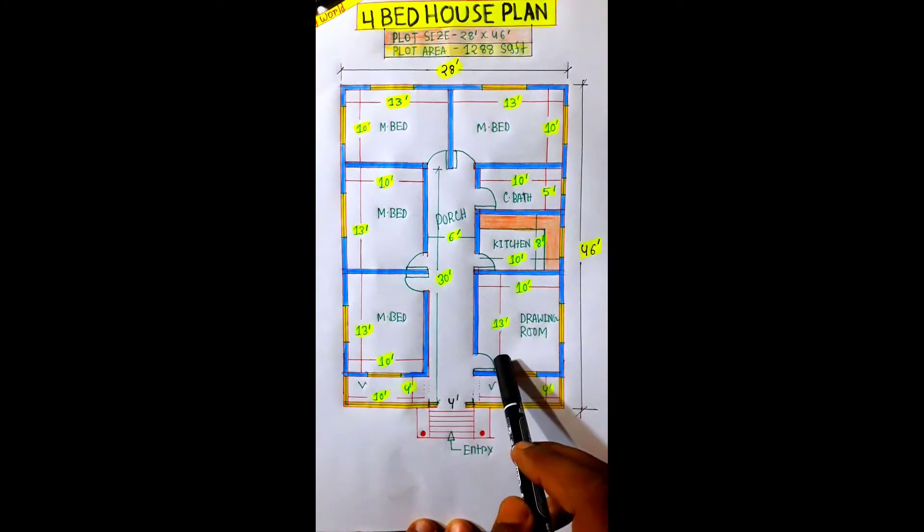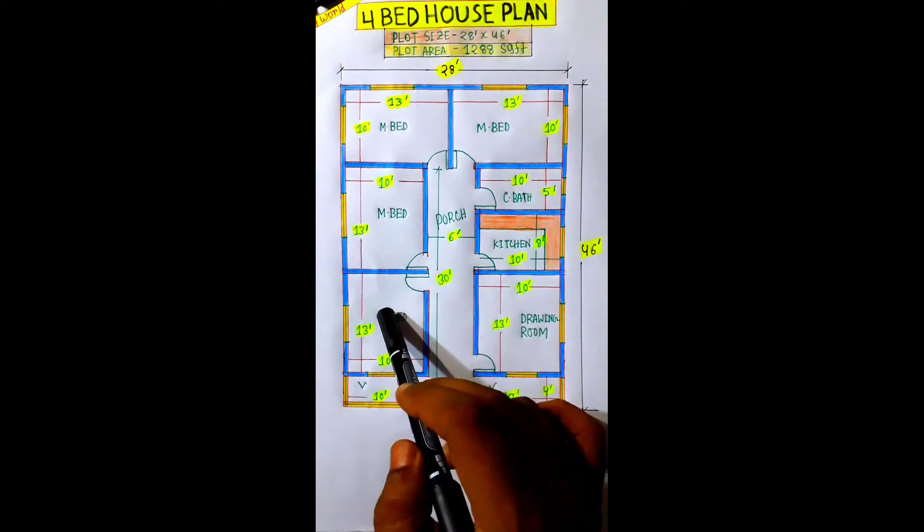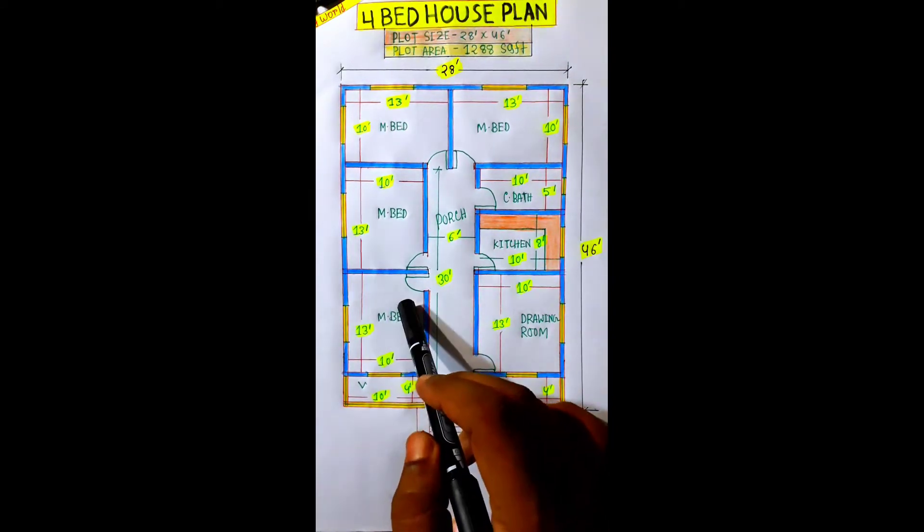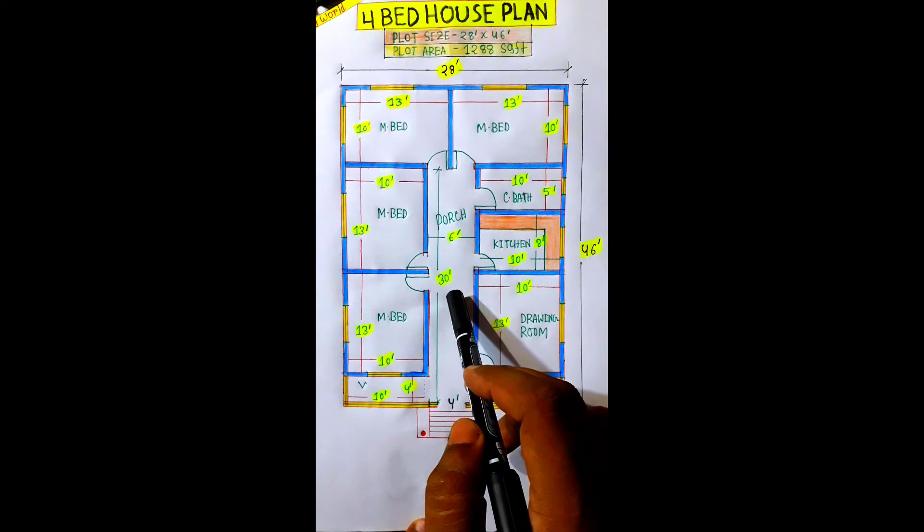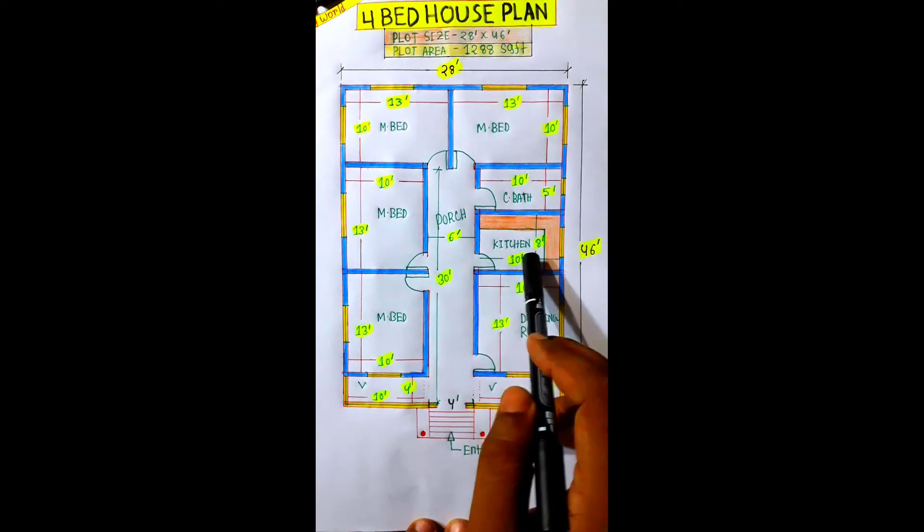10 feet by 13 feet for the drawing room. We provide a master bedroom, 10 feet by 13 feet. We provide a kitchen, 10 feet by 8 feet.